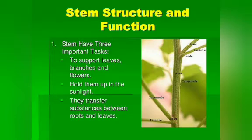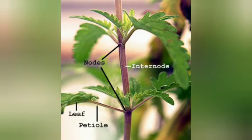Now, the functions of a stem: the stem is required to support the leaves, branches, and flowers and holds them up in the sunlight — giving the plant its mechanical strength. They also transfer substances from roots to leaves. Xylem carries water and minerals from the root to the leaves, and phloem carries food from the leaves to the other parts of the plant. Within the nodes, wherever the leaves are growing, these are the nodes, and the middle part between nodes is known as the internode.